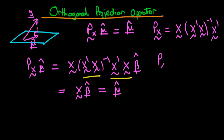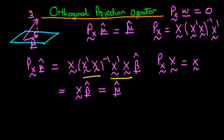Note that you could also put X in here — if you operate the projection operator on X, you'll just get X out. This holds for any vector lying in the column space of X. Next, we want to show that if we take the projection operator and operate it on some vector W which is orthogonal to the column space of X, we should get zero out. One such vector, shown in the diagram, is Y minus μ̂.